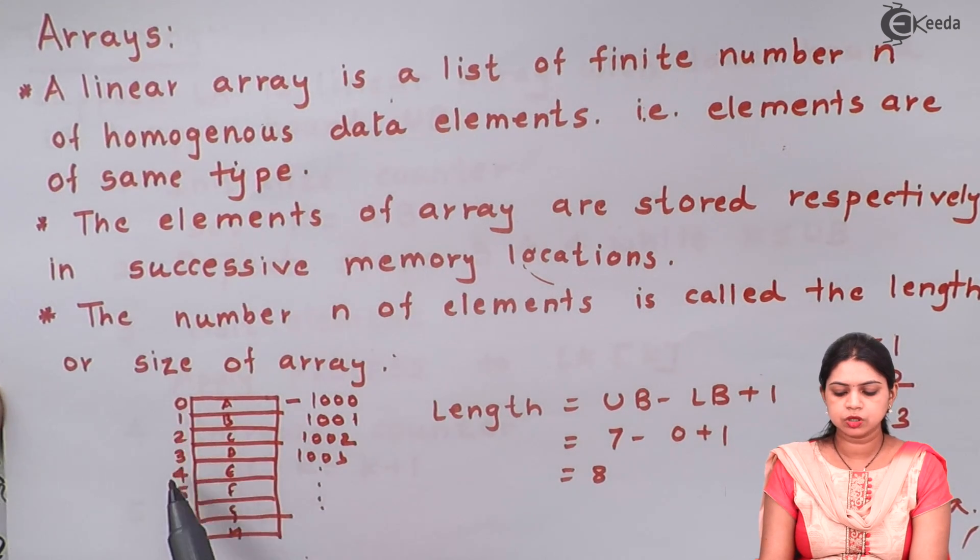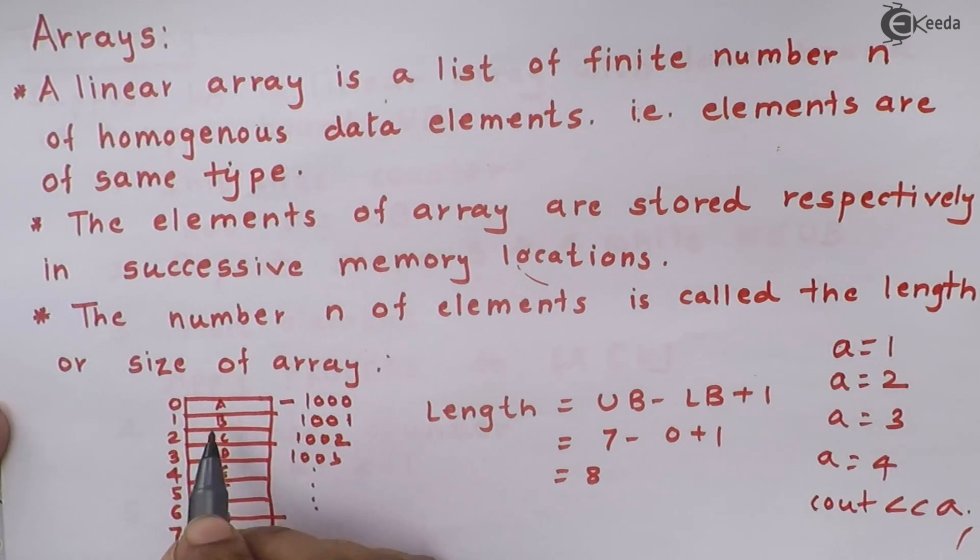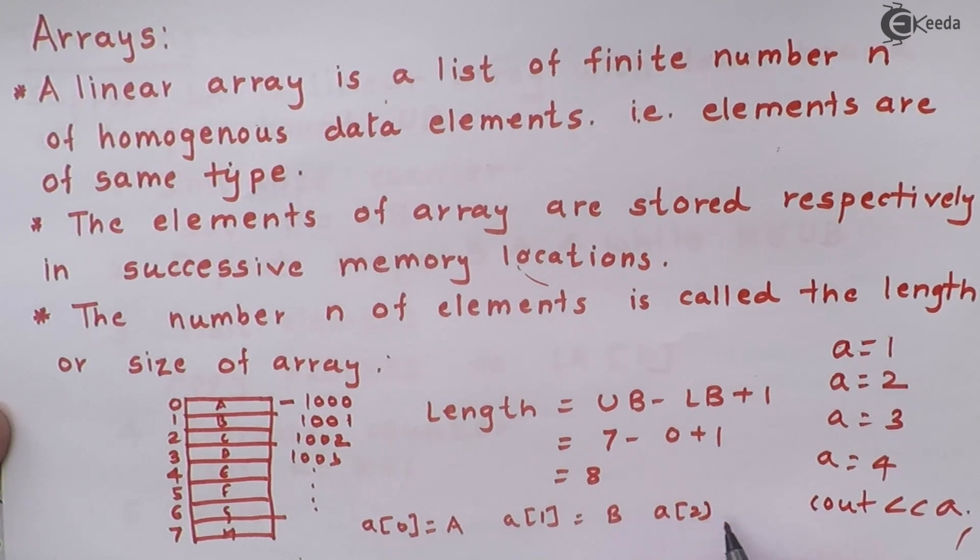So this is 0, 1, 2, 3 are called as index. So it means I have stored element a at a of 0. So my a of 0 is nothing but A. My a of 1 is equal to b. My a of 2 is equal to c and so on. And at the end my a of 7 will be h.